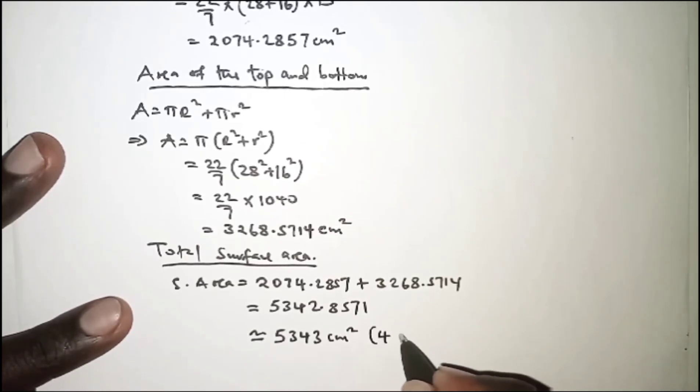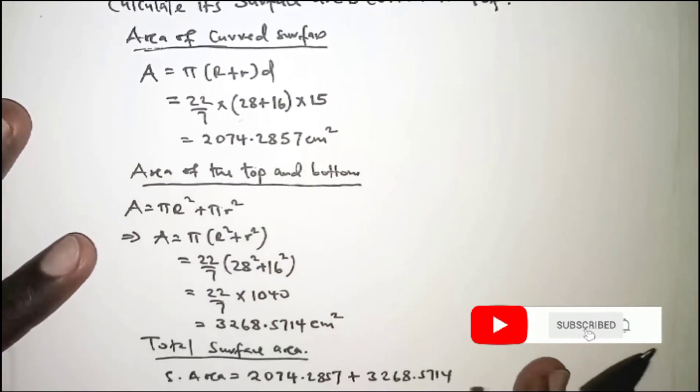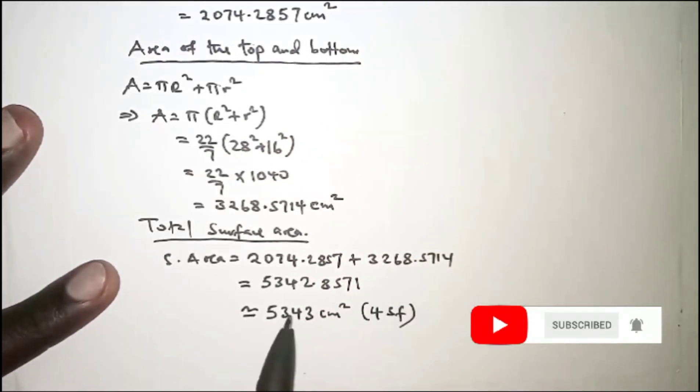Now this is expressed to four significant figures as had been instructed in the question. So finally, this is the surface area of the frustum.